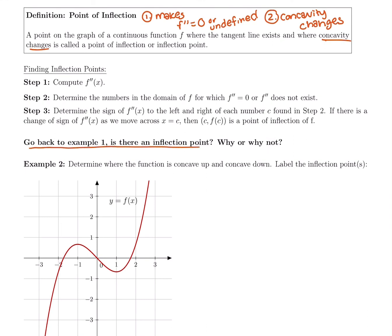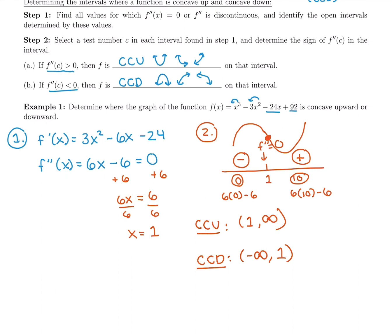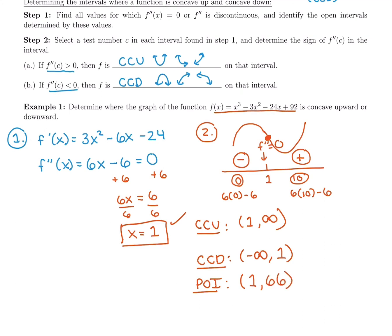Going back to our example: does x = 1 qualify as an inflection point? Yes — it made the second derivative zero, and concavity changes from concave down to concave up. So it is a point of inflection. An inflection point is written as a coordinate pair, not just x equals a value. Plugging x = 1 into the original function: 1³ - 3(1²) - 24(1) + 92 = 66. So the inflection point is (1, 66). Concavity and inflection points both come from the second derivative.